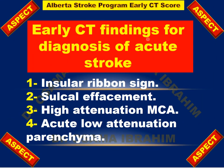What are the early CT findings for diagnosis of acute stroke on unenhanced CT? First is the insular ribbon sign, as seen in the first case. Second is sulcal effacement due to edema. Third is high attenuation of the middle cerebral artery — the dense MCA sign. And fourth is acute low attenuation of the parenchyma.